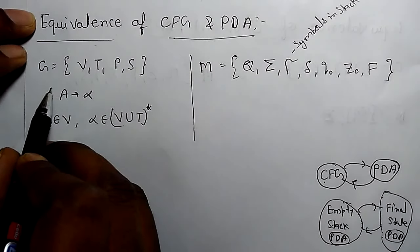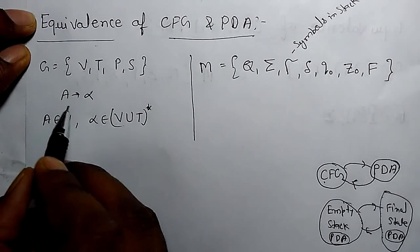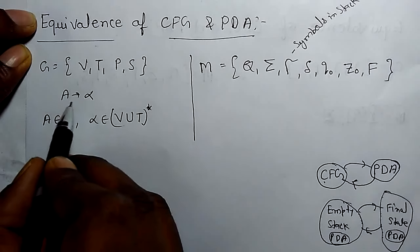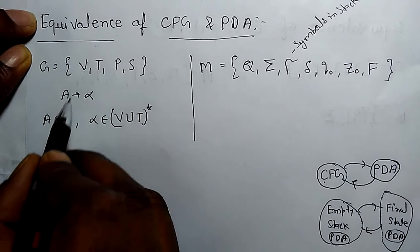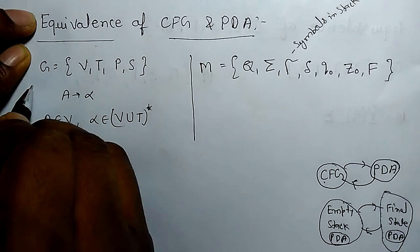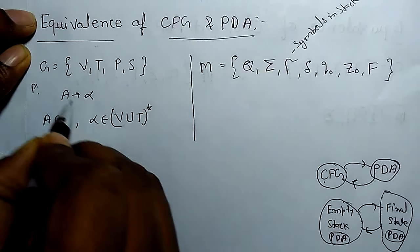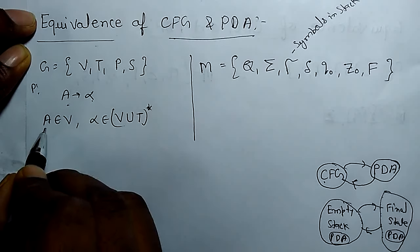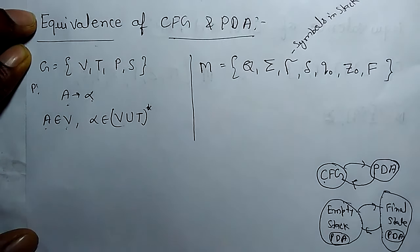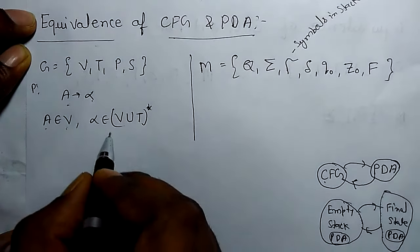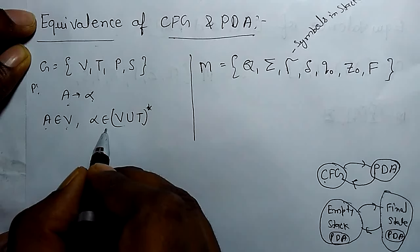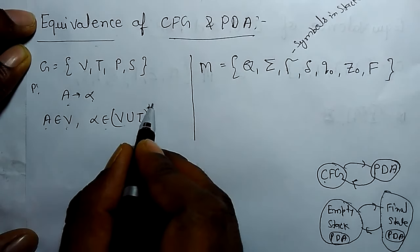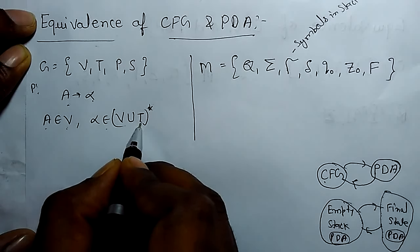So this is the grammar. If it is a context free grammar then there should be a derivation of production rule A derives alpha, where A belongs to variables and alpha belongs to the closure of V union T. T is a terminal.